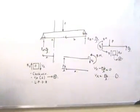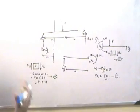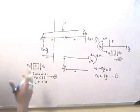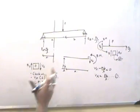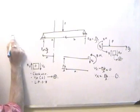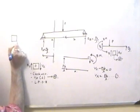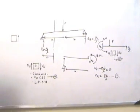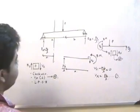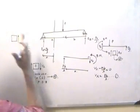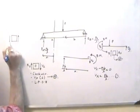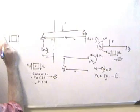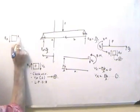Now, if we retract and look at the left portion of the beam again, if the element is acted on by shear force in the upward direction, then Vx is negative. This essentially means Vx will be in the upward direction and the resultant force RF will act in the downward direction.